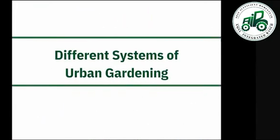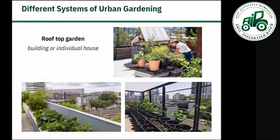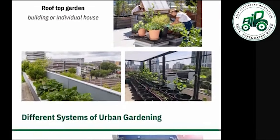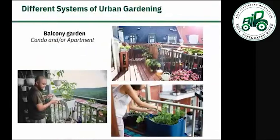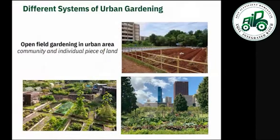Different systems of urban gardening: rooftop garden — whether in a building or individual house, you can produce and grow different kinds of vegetables using a rooftop garden, provided you have a rooftop. Next is balcony garden, suited for condos and apartments. Then open field gardening in urban areas — community and individual pieces of land.